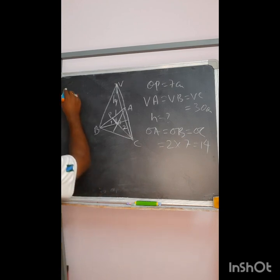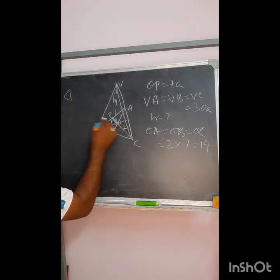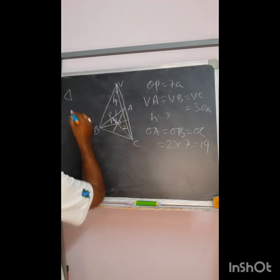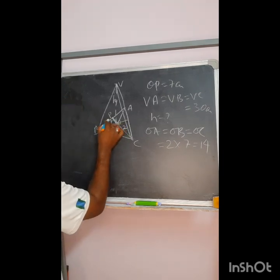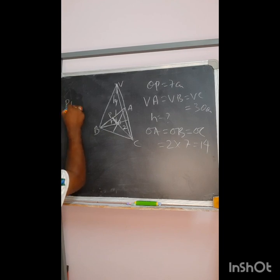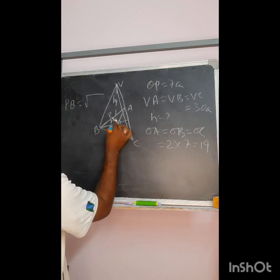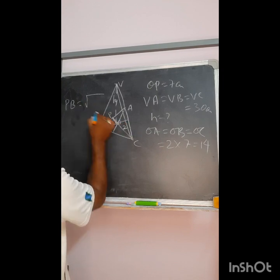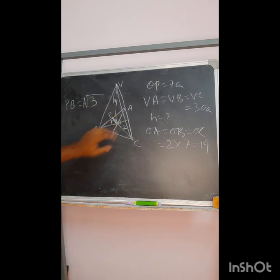Now if I consider the triangle, this triangle, this is a right triangle because OP is perpendicular to AB. So if I consider OPB from there, this triangle is a right triangle. From the triangle I can calculate PB. PB is nothing but under root of OB square minus OP square. Both I know, from there if you calculate I will get it is 7 root 3, you can calculate at home, is very easy.